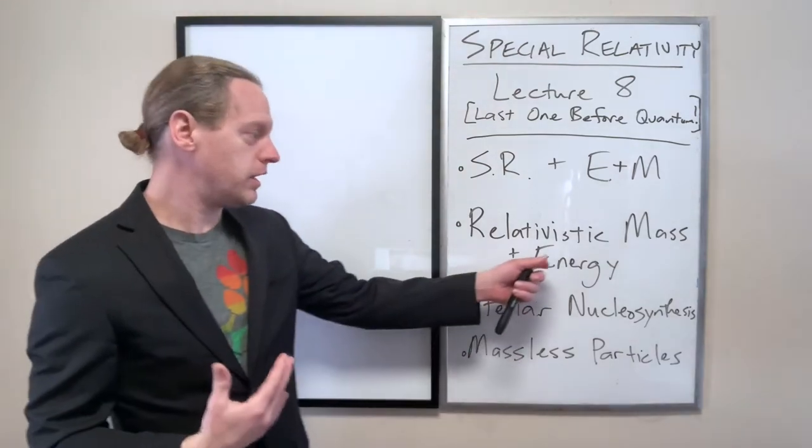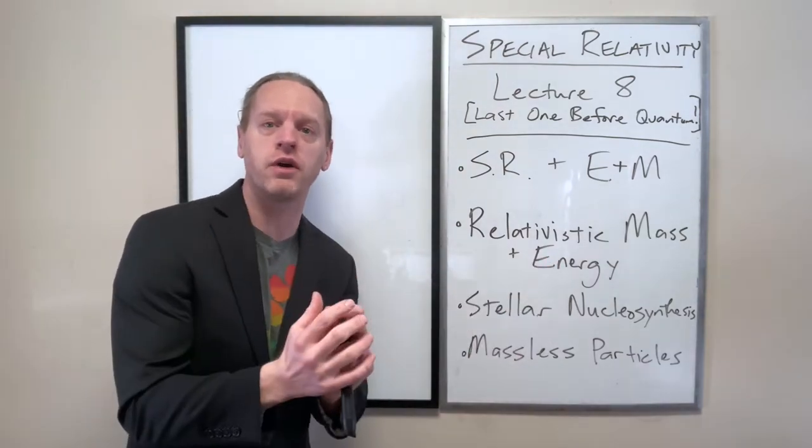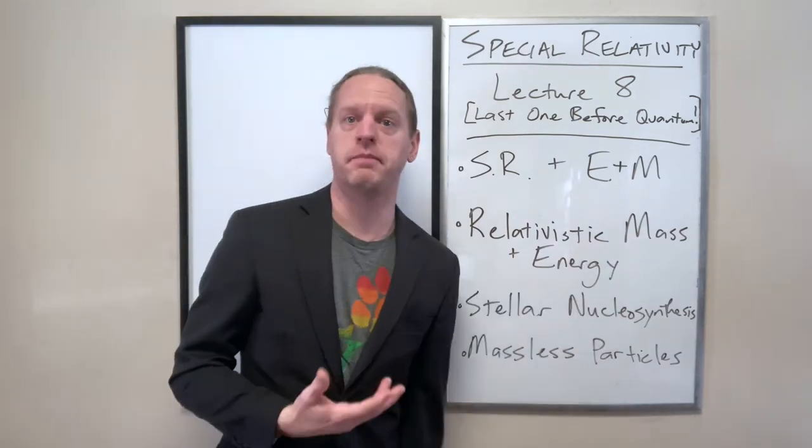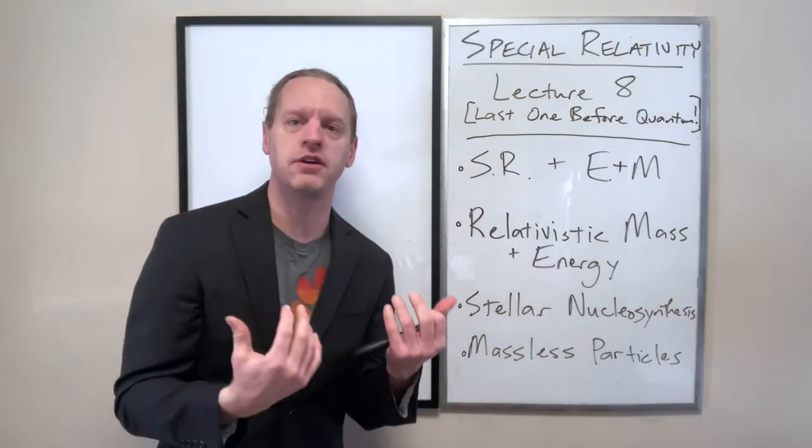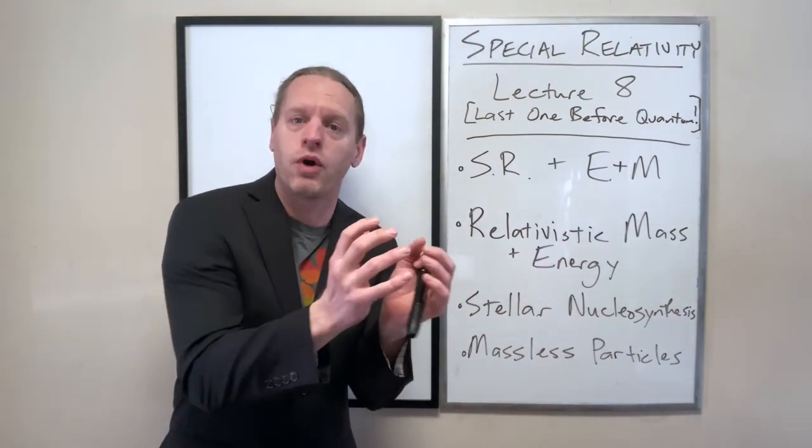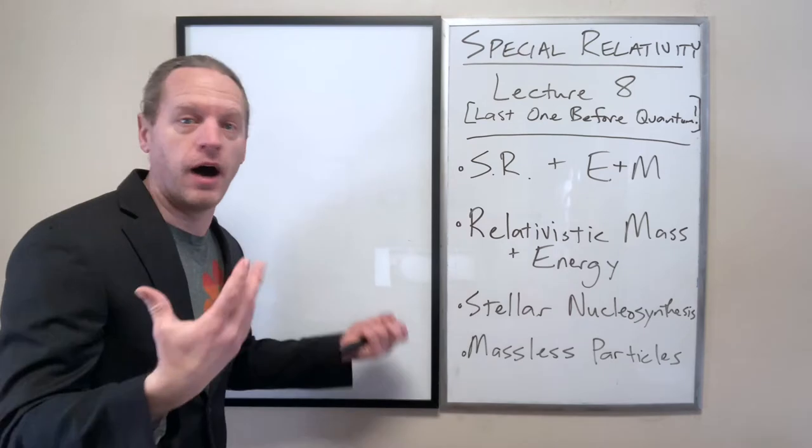The first is how we understand how the inside of the sun works by understanding how relativistic mass works. And so we'll actually go through the exact process by which our sun creates its energy at the core of the inferno through nuclear fusion.